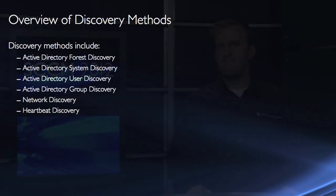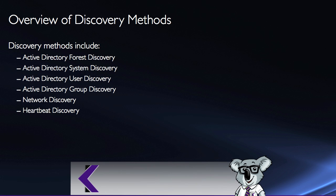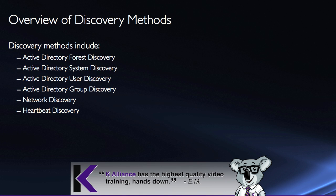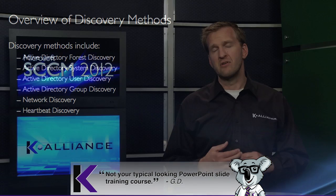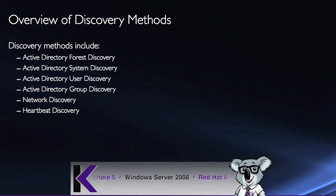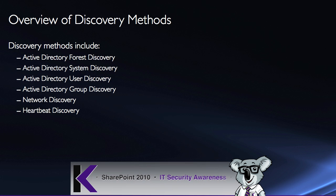There are a number of different discovery methods you can use, and you can actually use a combination of these to discover the devices on your network. They include Active Directory Forest Discovery, Active Directory System Discovery, User Discovery, and Group Discovery — all Active Directory related, meaning we're querying a portion of our Active Directory for information about users and computers. Then you have Network Discovery and Heartbeat Discovery. Let's look at each of these in a little more detail.